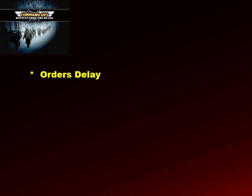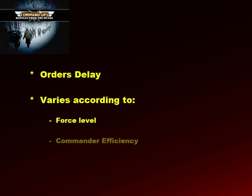Command is exercised over time — the fourth dimension. In Command Ops, when a commander issues orders, it takes time for these to be transmitted to subordinates. It then takes more time for them to assess and develop their plans, and if they have subordinates, the whole process must be repeated down the line. The amount of time varies according to the level of force — divisions take longer than brigades, which take longer than battalions.